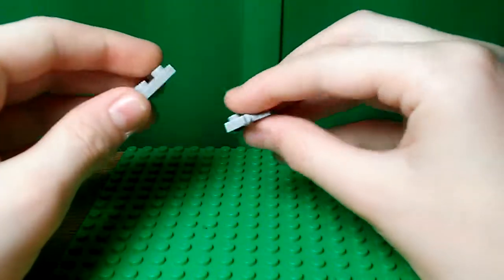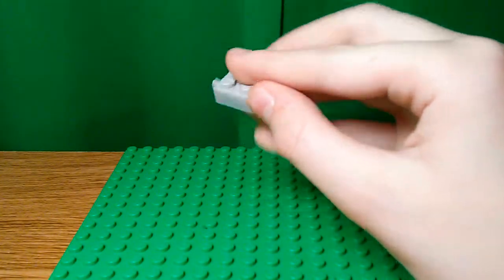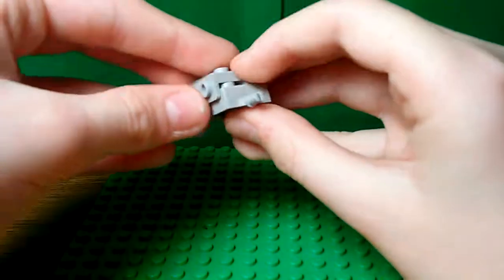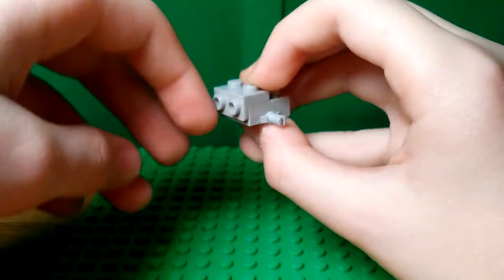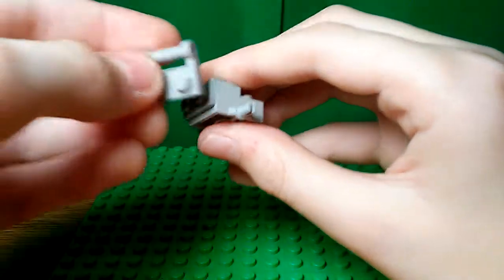Then you take a 2x2 tile, and all of this in light bluish gray, or most. And then you take one of these 1x2s with a 1x2 kind of attached to the side of it, and a 1x2 with bar.